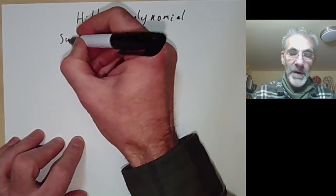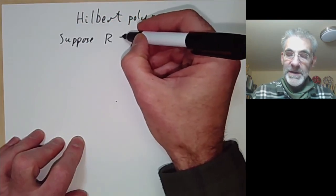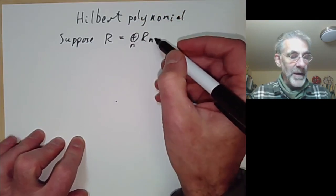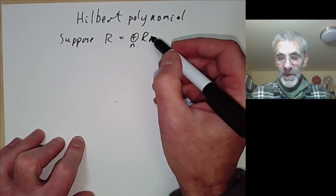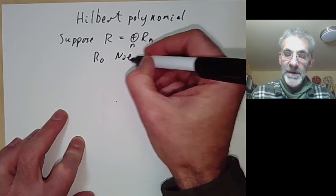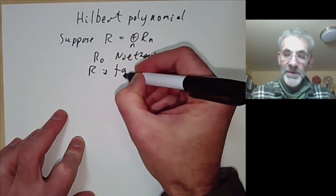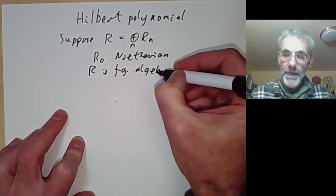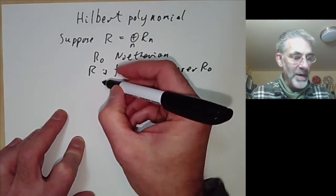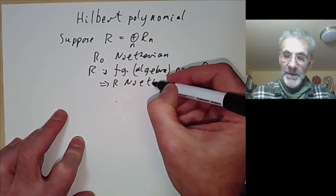Suppose we've got a graded ring R, graded as a sum over integers n of components R_n, and we're going to assume that R_0 is Noetherian and R is finitely generated as an algebra over R_0. This implies R is Noetherian as well, by Hilbert's theorem.